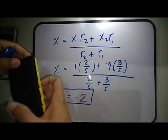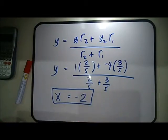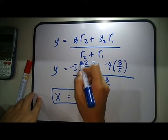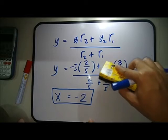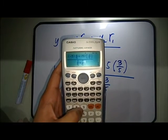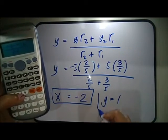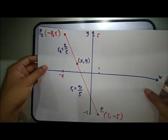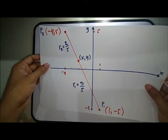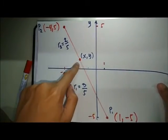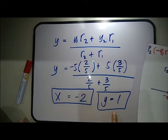For Y, we just replace the variable x with y in the formula. So y1 is negative 5 and y2 is 5. Substituting gives the y-coordinate as 1. So our final answer is (-2, 1). This means the line segment from Point 1 (1, -5) to Point 2 (-4, 5) is divided at three-fifths of the total length from Point 1 at the point (-2, 1).